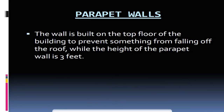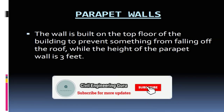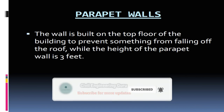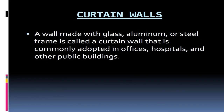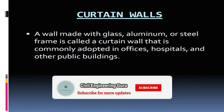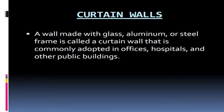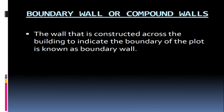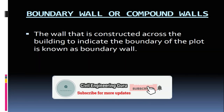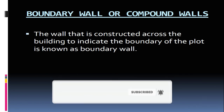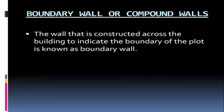Parapet walls. The wall built on the top floor of the building to prevent something from falling off the roof. The height of the parapet wall is three feet. Curtain walls. A wall made with glass, aluminium, or steel frame is called a curtain wall, commonly adopted in offices, hospitals, and other public buildings. Boundary wall or compound walls. The wall that is constructed across the building to indicate the boundary of the plot is known as a boundary wall.